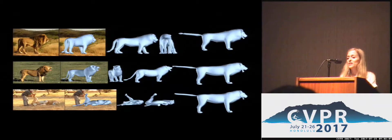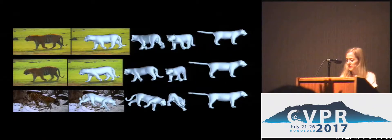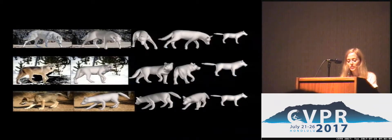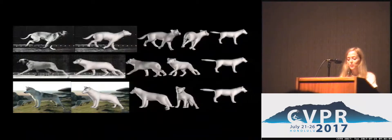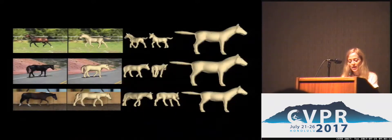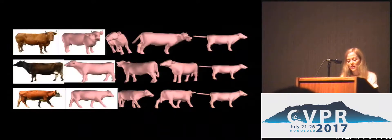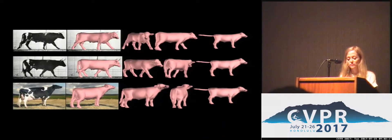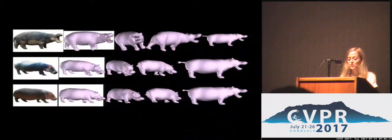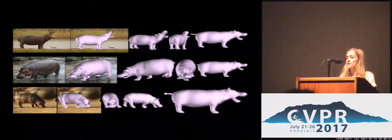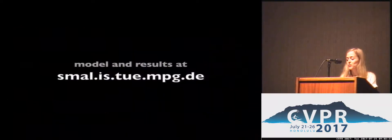These are some examples of the fittings. The last column shows the results in neutral pose to illustrate the recovered shape. Despite the fact that we trained the model on toys, our experiments show that it captures shapes of real animals as well. The model and results are available online. Thank you.